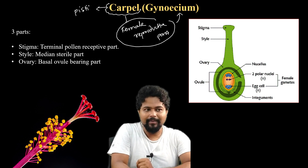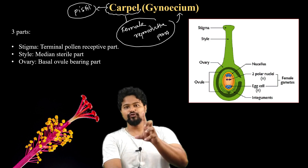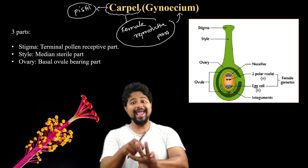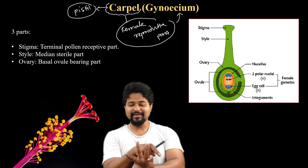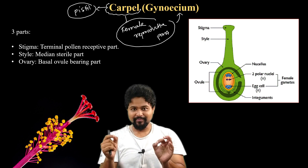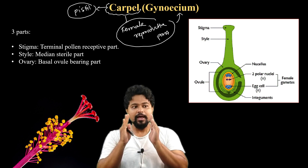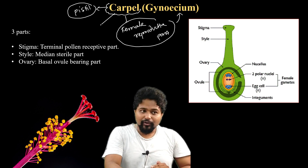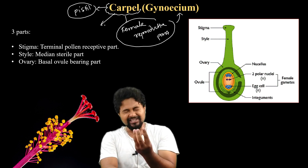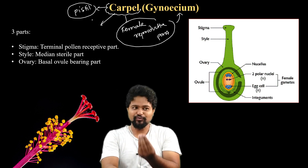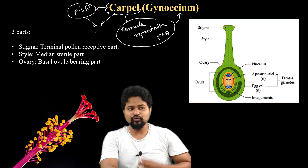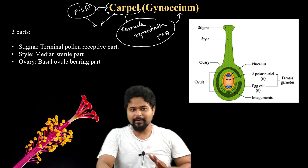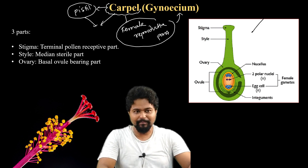Carpel, pistil, and gynoecium are all the same — there is no confusion. So this is the structure of carpel and gynoecium. It has three parts — three parts.